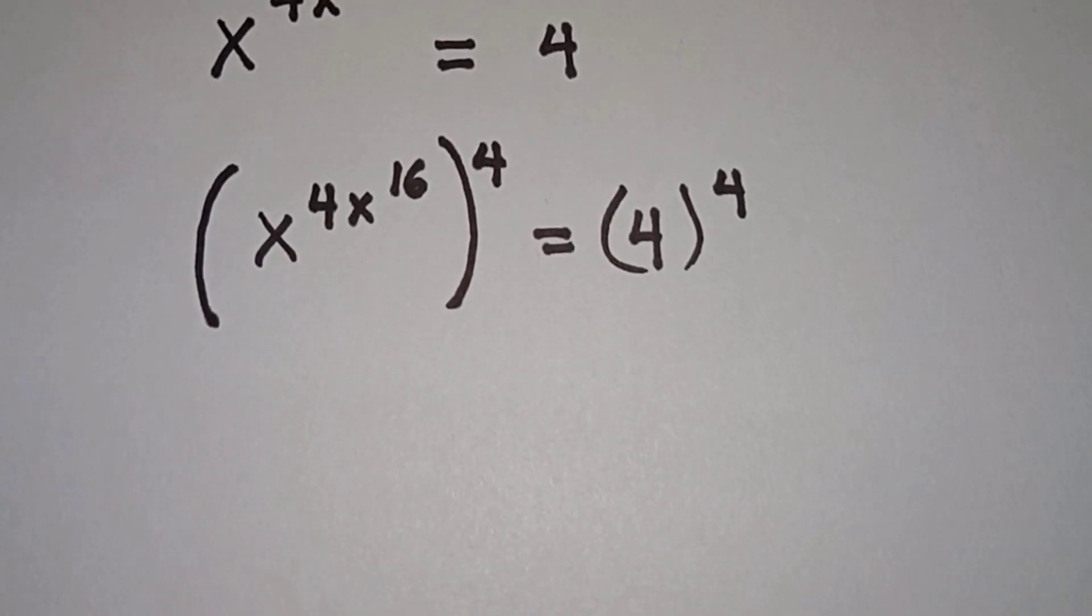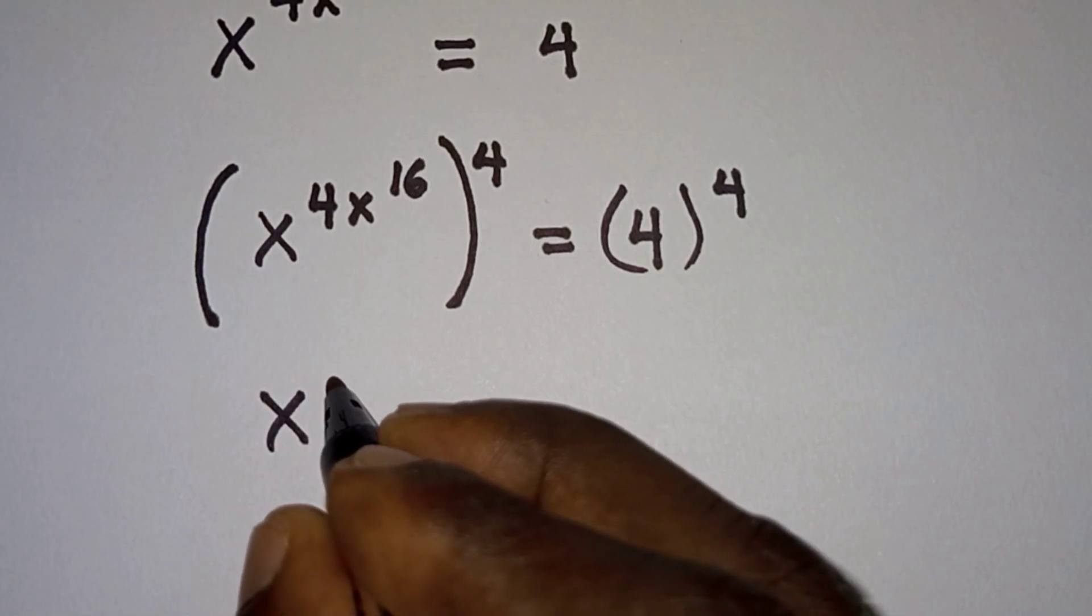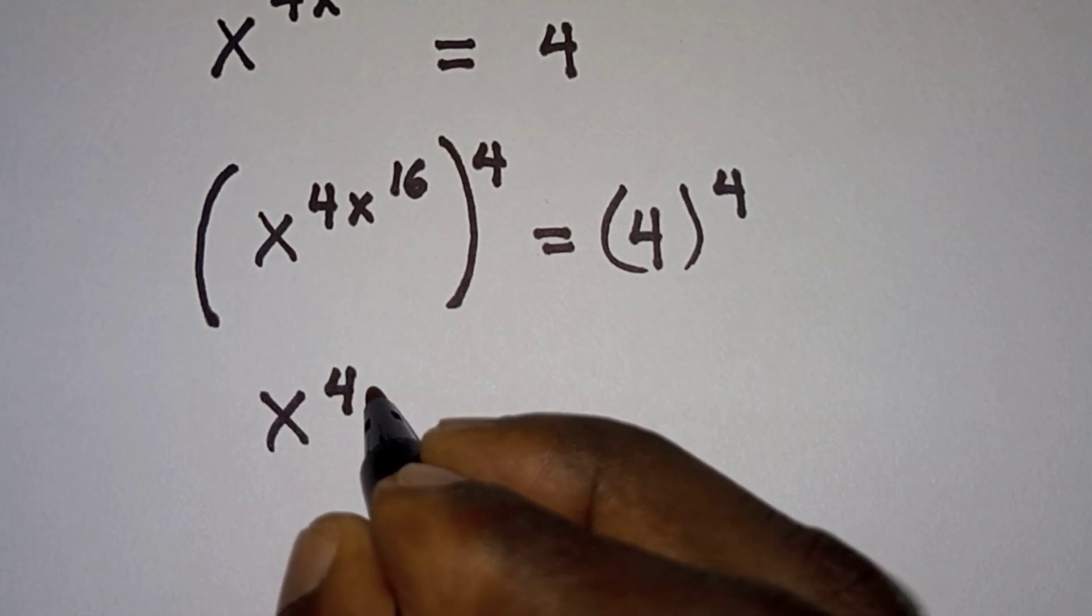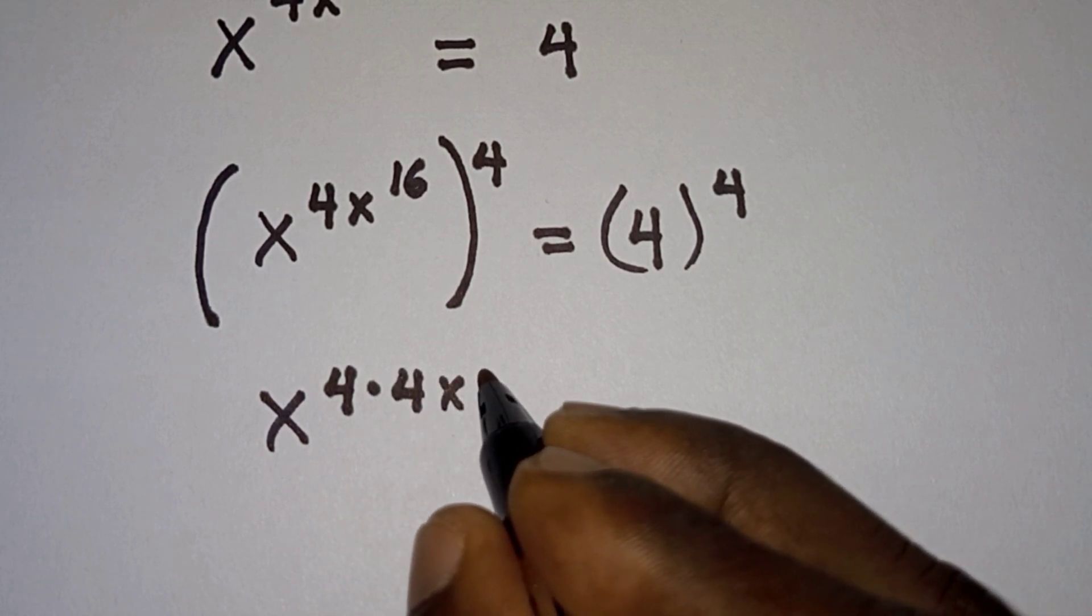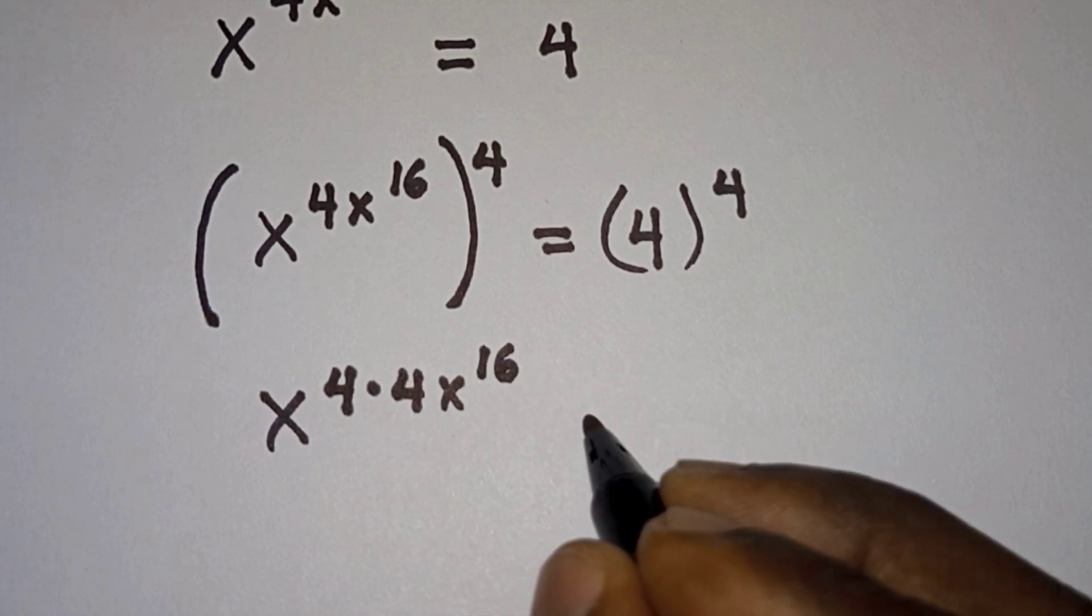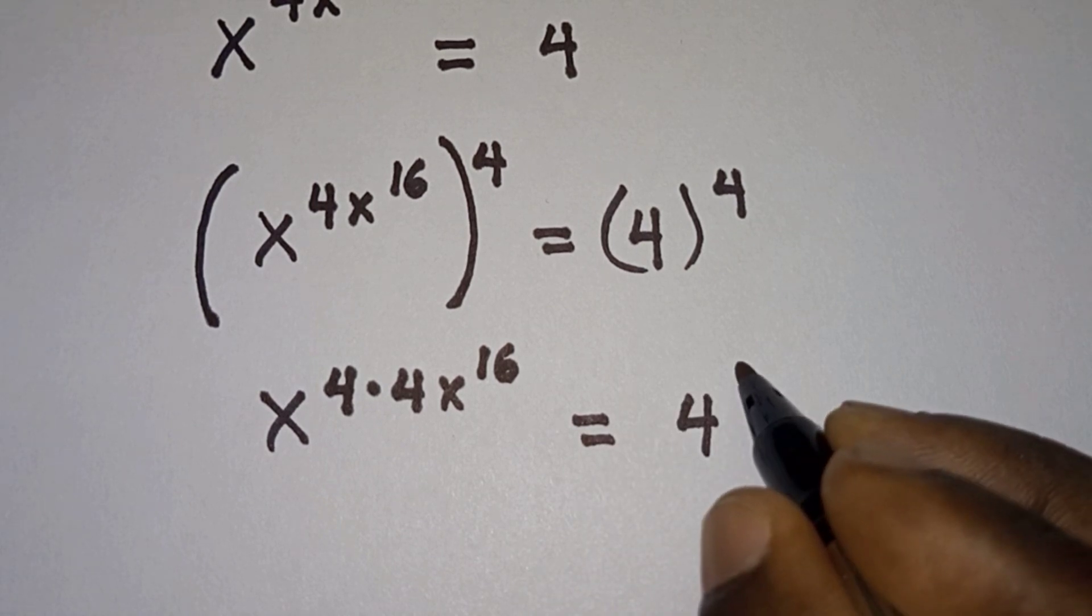Then we will simplify the exponent on the left hand side of the equation. We're going to have x to the power 4 times x to the power 16 is equal to 4 to the power 4.